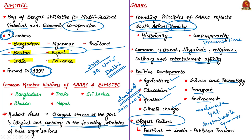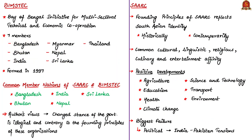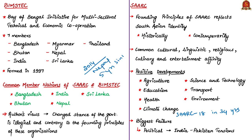But SAARC's biggest failure is in the political sphere, mainly because of India-Pakistan tensions. The heads of state have met only 18 times in last 34 years since 1985. The last summit was held only in 2014 and it has been already five years since the last summit, which was held in Kathmandu, the capital of Nepal.